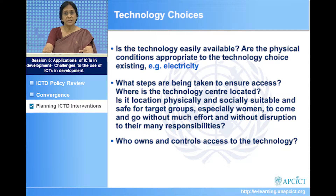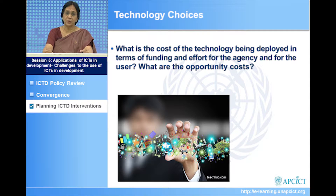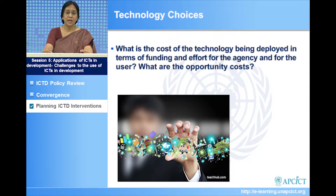We also have to look at costs in terms of technology deployment — funding and effort for the agency and for the user. Newer technologies will always keep coming. So it is not just a question of newness, but of trying to decide what are the opportunity costs — the costs of putting the technology in versus achieving the same goal in a different way. These are tools that when used wisely are beneficial, but there is no sense in wasting hard-earned money when it is cheaper to do the same thing differently.